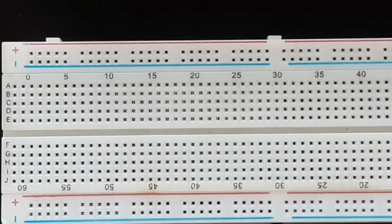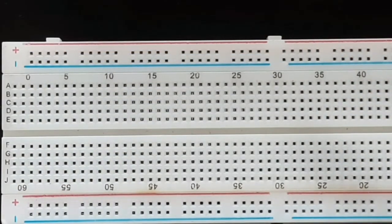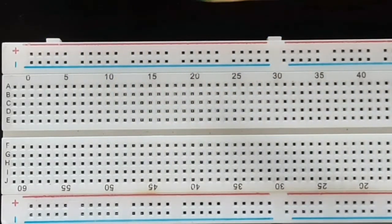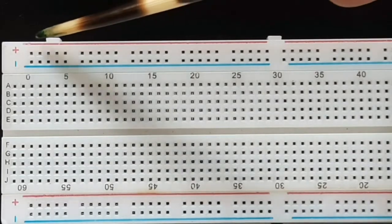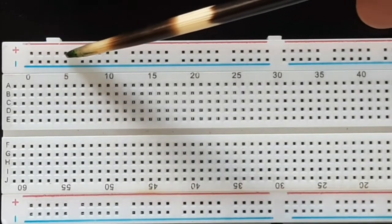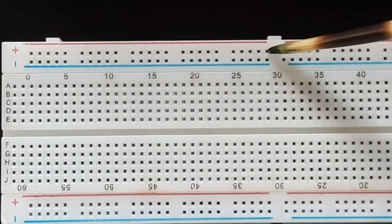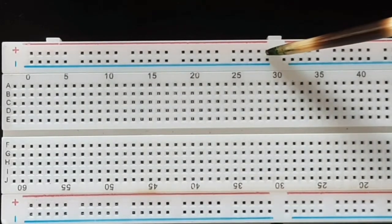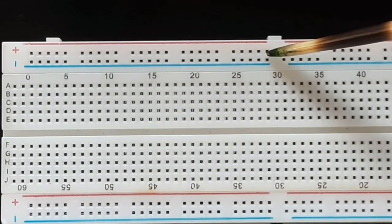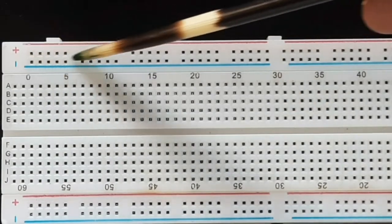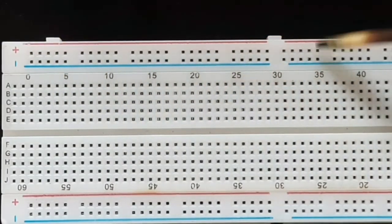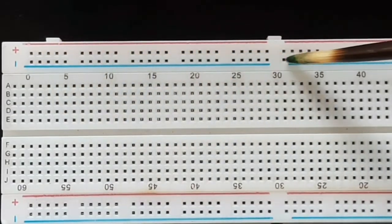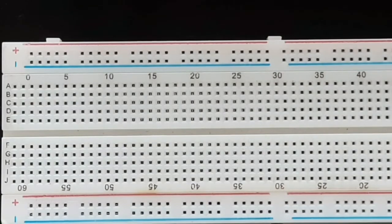Now coming to this horizontal side, you can see that from this point to this point, that is half of the breadboard length, there are 25 points and this constitutes a single point. Here this 25 lines in the next row constitute a different point.